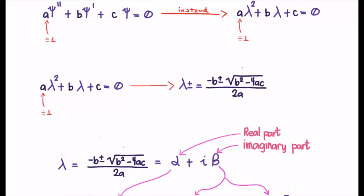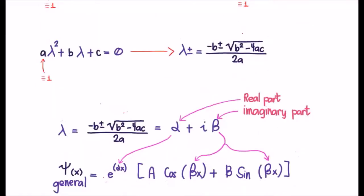Solving quadratic equations is very straightforward. The solution is given by minus b, plus or minus the square root of b² minus 4ac, all over 2a. Most generally, lambda is a complex number — in other words, it has a real part, which I'm going to call alpha, and an imaginary part which I'm going to call beta.